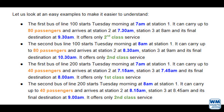The first bus of line 200 starts Tuesday morning at 7 am at station 1. It can carry up to 40 passengers and arrives at station 2 at 7:15 am, station 3 at 7:45 am, and its final destination at 8 am. It offers only first class service. The second bus of line 200 starts Tuesday morning at 8 am at station 1. It can carry up to 40 passengers and arrives at station 2 at 8:15 am, station 3 at 8:45 am, and its final destination at 9 am. It offers only second class service.